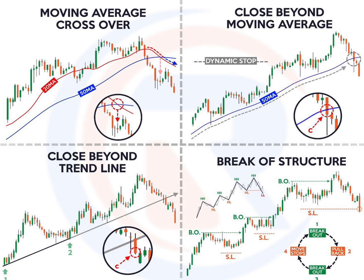A trailing stop can maximize a gain, allowing a trend to run as far as it will go. While a stop loss is set to cap a loss, a trailing stop is moving to maximize a gain. A trailing stop is an exit strategy that triggers an exit when a price reverses back enough to signal the possibility that a trend is possibly coming to an end — a quantified strategy to keep a trader in a trend until the end when it starts to bend.